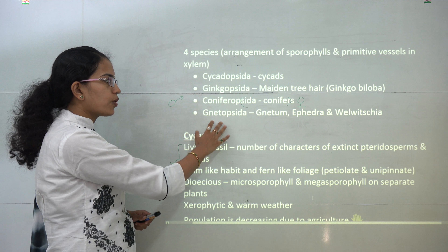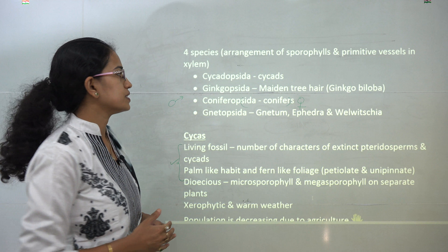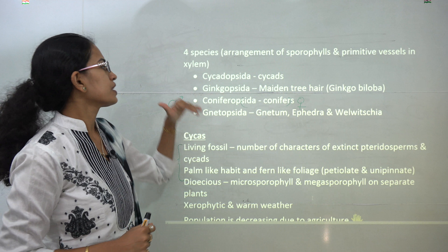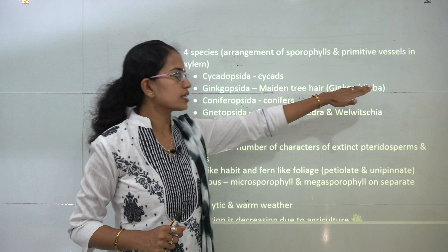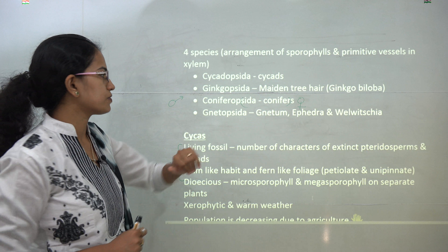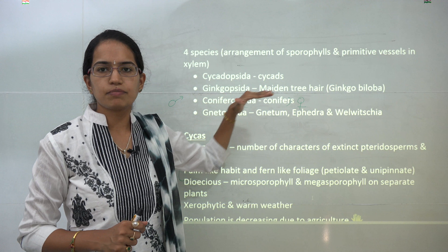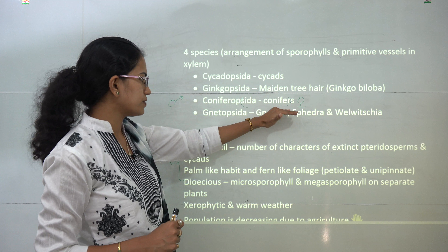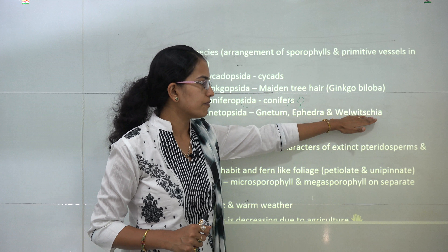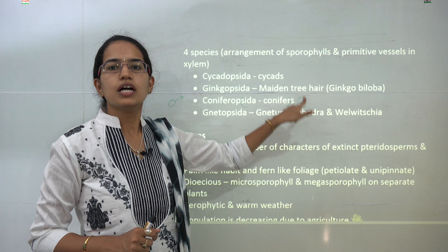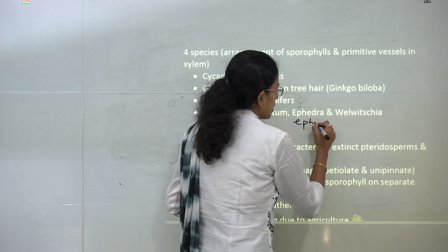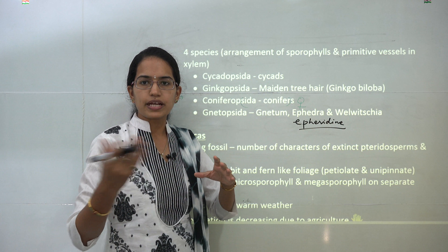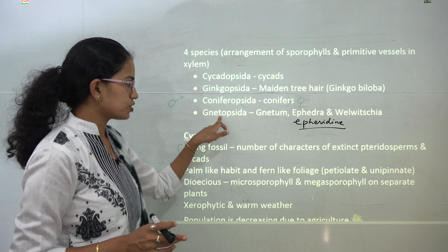We will discuss four different species of gymnosperms with one example from each. The first is cycadopsida — the cycads, commonly known as cycas plants. Then you have ginkgopsida — the maidenhair tree, or Ginkgo biloba, which is an important living fossil. Then you have coniferopsida — common examples include pine, larch, fir, and spruce, including the Christmas tree. Then you have gnetopsida — you have Gnetum, Ephedra, and Welwitschia. Ephedra is important because from it you have a drug known as ephedrine, which is important for respiratory diseases.